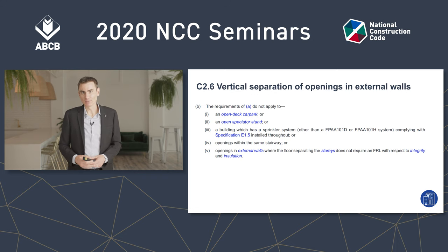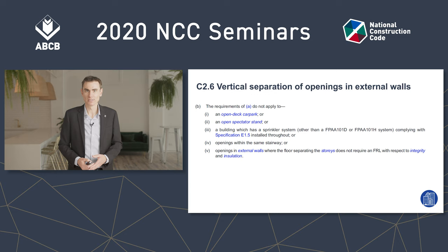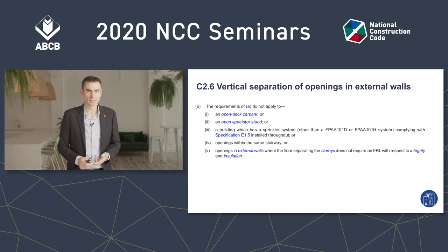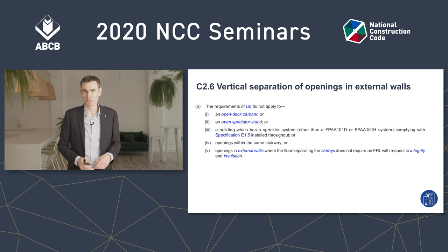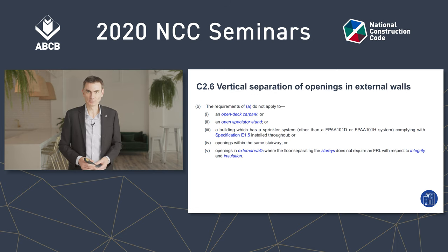Sub-clause B lists the exemptions — when you don't have to worry about providing a spandrel or horizontal construction. Of course this only applies to type A buildings, so type B and type C buildings don't need to worry. You also don't need to protect openings in an open deck car park or open spectator stand, or in a sprinkler-protected building — though note that FPAA 101D and 101H systems don't enjoy this concession. You don't need to protect openings in the same stairway, nor where the floor between storeys doesn't need an integrity or insulation rating in its FRL.